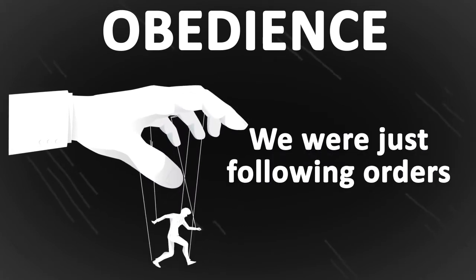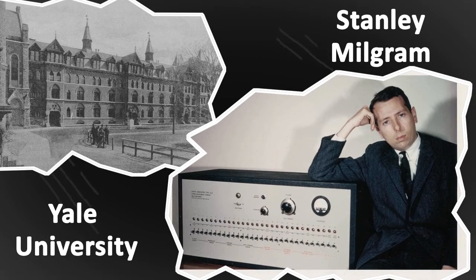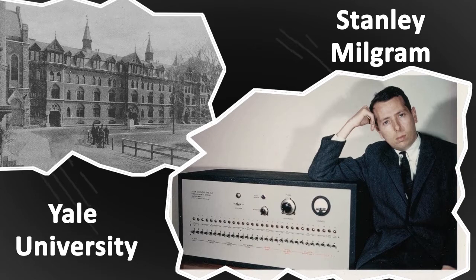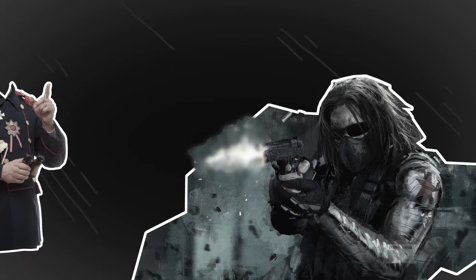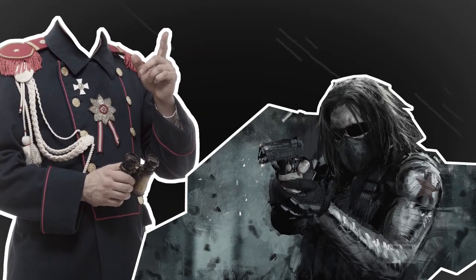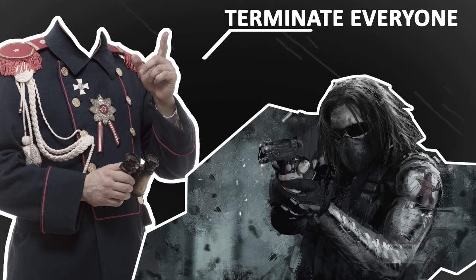This case got the interest of Stanley Milgram, a psychologist from Yale University, and he wanted to investigate whether Germans in this trial could actually be obedient to authority figures to the degree they explained. Can people really lose their humanity if an authority figure orders them to carry out their superiors' orders and execute them if they are seen as authority figures?